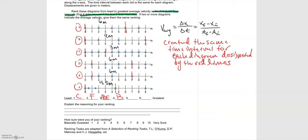Our reasoning for the ranking is that since they all had the same time interval, a larger displacement gives a larger average velocity.